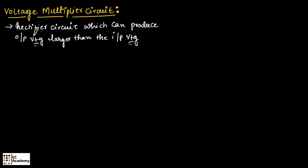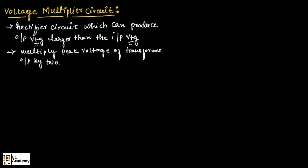This circuit can multiply the peak voltage of the transformer output by 2 times, 3 times, 4 times, or many times depending upon the circuit we use.